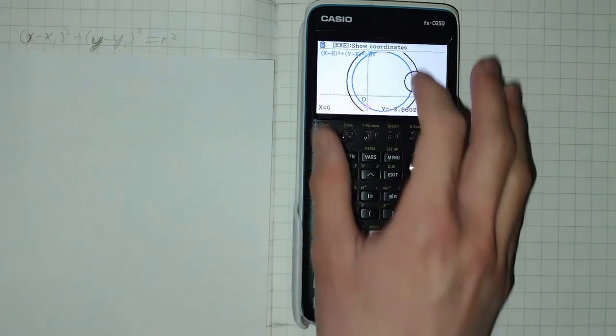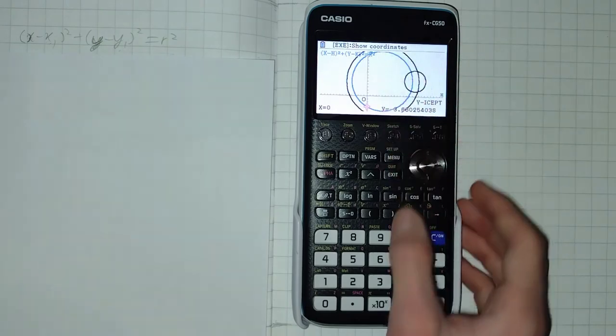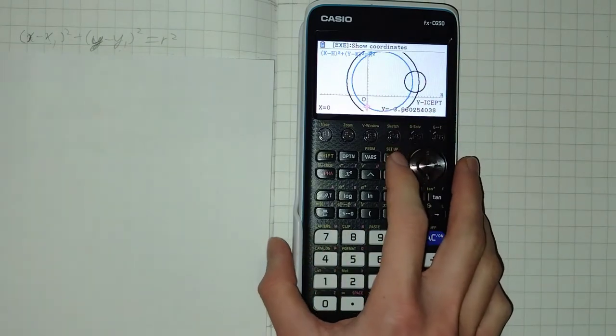But it would be nice to have the options to find like the intersection between a straight line and the circle or just to be able to visualise a tangent line with the circle to check if your answer looks roughly correct.